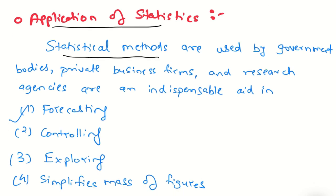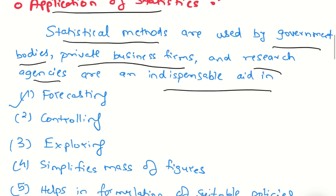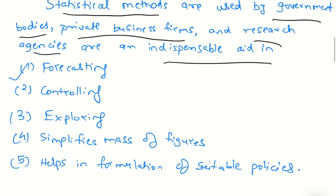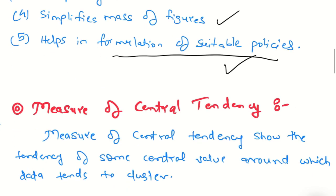Statistical data are used by government bodies like IMD for example, private business firms, and research agencies. They are an indispensable aid in forecasting, controlling, exploring, and simplifying mass of figures. Data collected in the census helps formulate suitable policies.